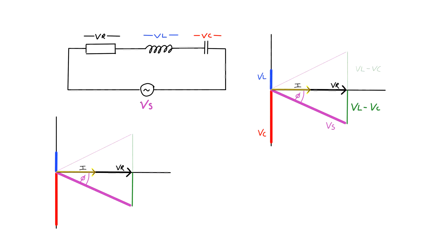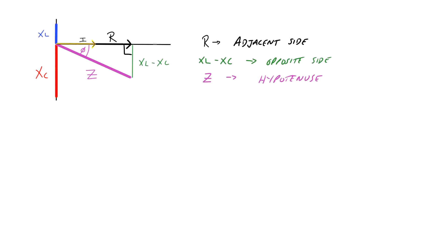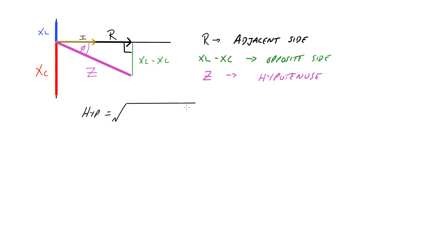This voltage triangle can be replicated and it's exactly the same triangle as the impedance triangle, with the impedance as the hypotenuse. We have capacitive reactance and inductive reactance, and instead of the voltage of the resistor we have the resistance itself. So the same triangle exists whether you're using the voltages of the components or their reactances and resistances. The resistor is the adjacent side of the right angle triangle, XL minus XC is the opposite side, and the hypotenuse is the impedance Z.